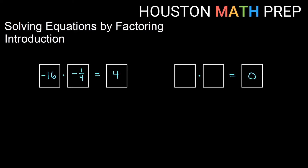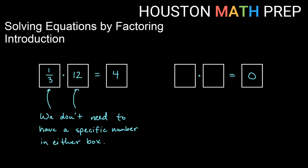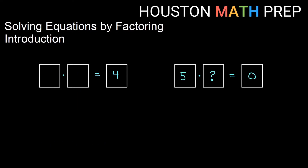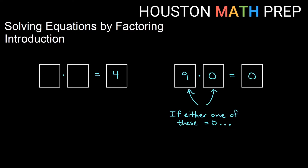Something more different like negative 16 times negative a fourth — multiply those, we would also get four. The pattern with some number like four: if I put a number in one of the boxes, I don't need a specific thing in either box. But if we have two things multiplied together to get zero — if I have five times something gives zero, or 13 times something gives zero, anything like negative six times something gives zero — that second thing really needs to be specifically zero, no matter what the first number is, as long as it's not zero. So at least one of the boxes needs to be zero in order to multiply and get zero. It's possible we could have both, but at least one needs to be zero.